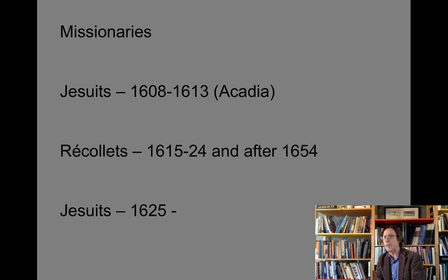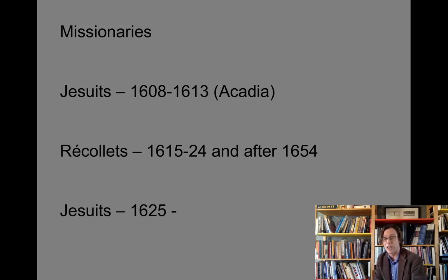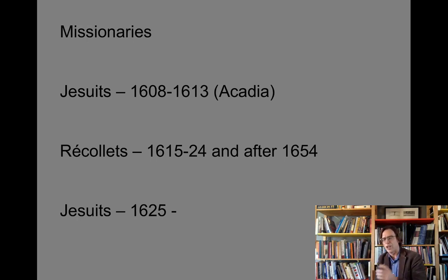This also begins the process of bringing missionaries into the territory. As part of the financing of these operations, aristocrats in France would invest in these private companies but would insist they bring along missionaries to proselytize — to bring the Catholic Christian faith to the indigenous people. You can see Jesuits in Acadia from 1608 to 1613, then the Recollets taking over in 1615 and returning in the 1650s, and the Jesuits returning after 1625. They're going to be a presence we'll discuss more later.